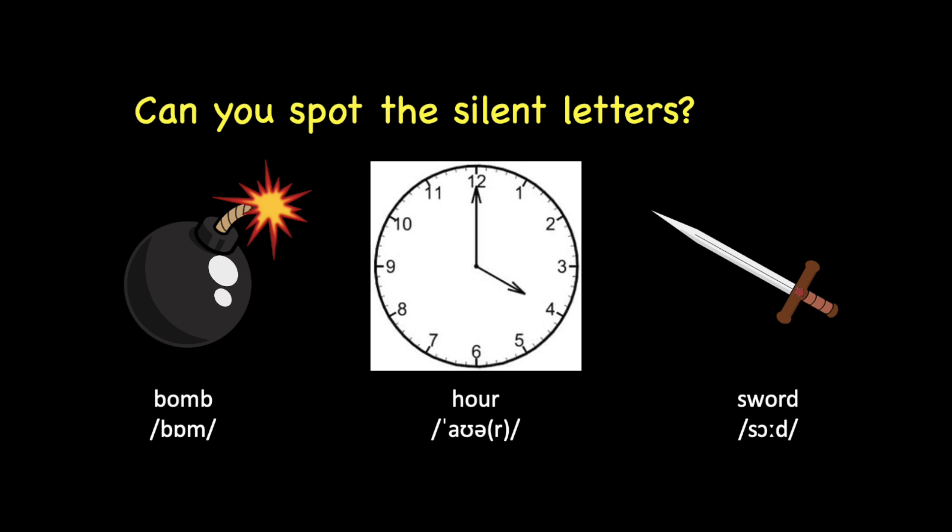All right, let's try. See if you can spot the silent letters. For the first one, it's called 'bomb'. Can you tell me what is the silent letter here? The second one is 'hour'. Can you tell me what's the silent letter here? And for the last one, this is 'sword'. So, what's the silent letter here?